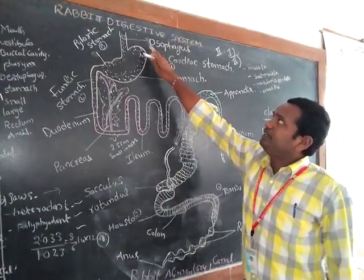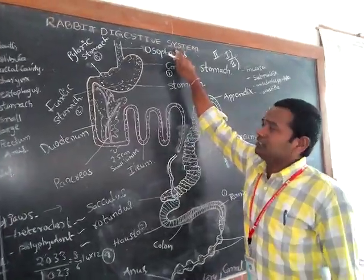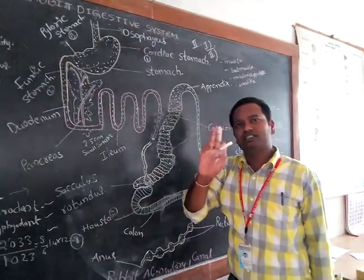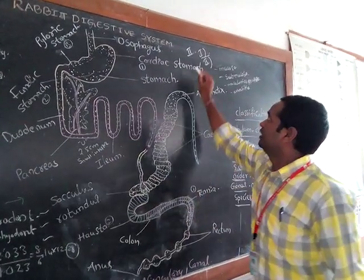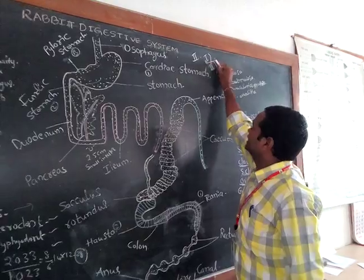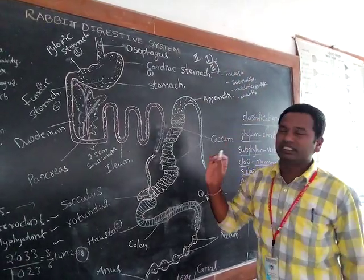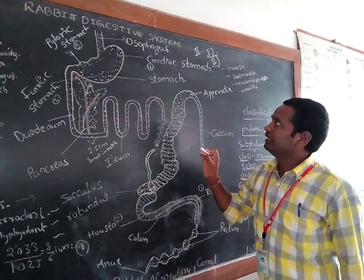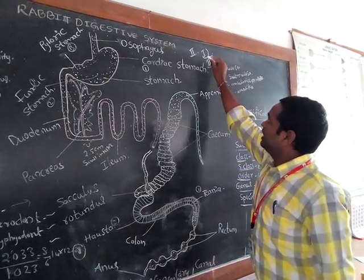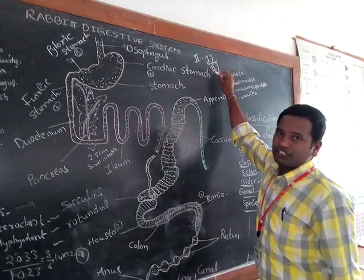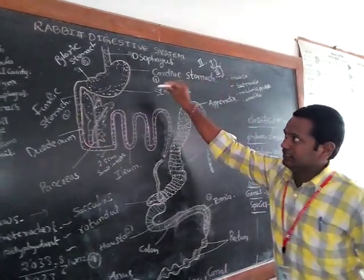The Rabbit Digestive System consists of two parts. Number one: the alimentary canal. Number two: the digestive glands.